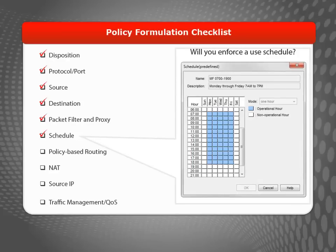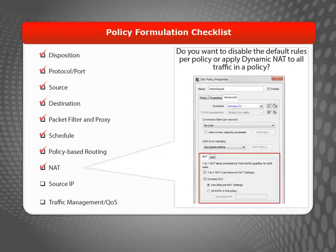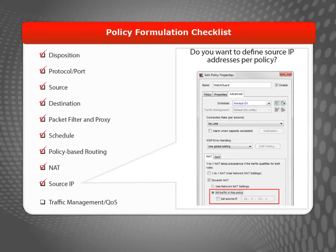You can use policies to enforce a schedule — for example, you can configure a particular policy to be operational only during business hours or only after business hours. If you have multiple wide area network connections or multiple connections to the internet, you can use policy-based routing; for example, browsing goes to ISP1, VPN traffic goes to ISP2, and so on. While policies use dynamic and one-to-one NAT rules by default, you can disable the default rules per policy or choose to apply dynamic NAT to all traffic in the policy and even specify a source IP address.